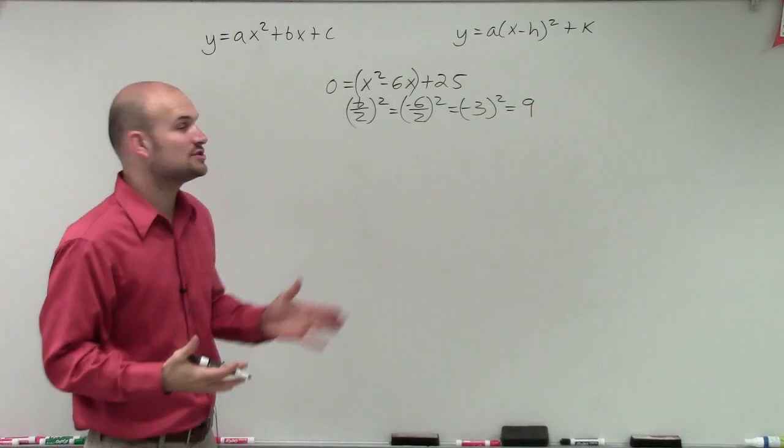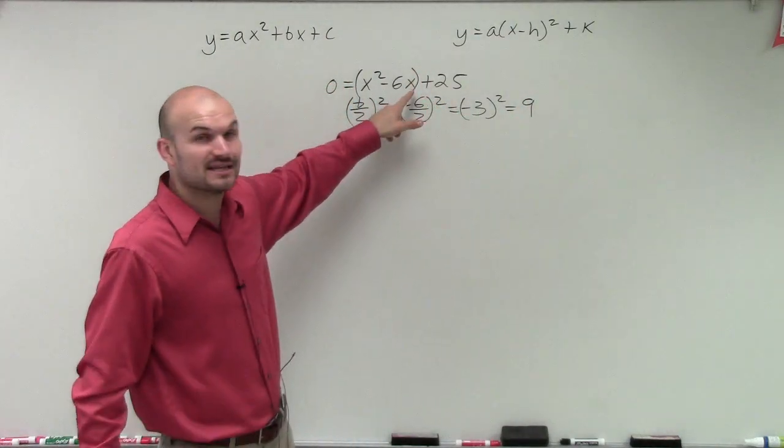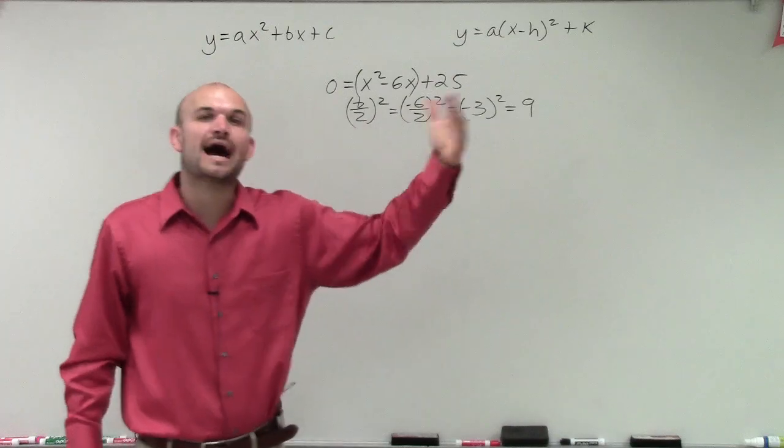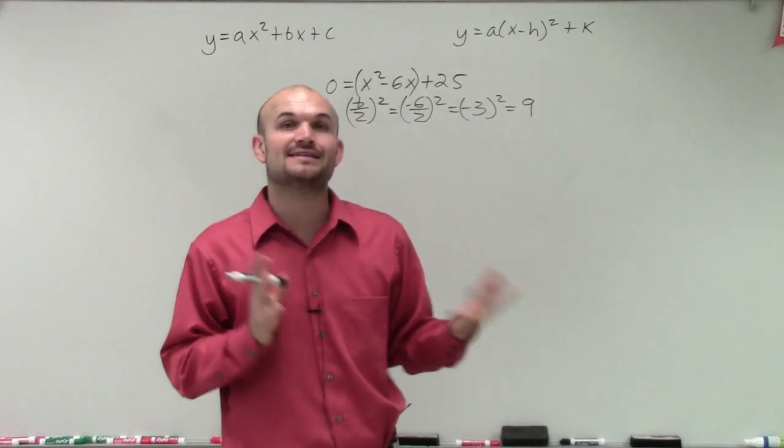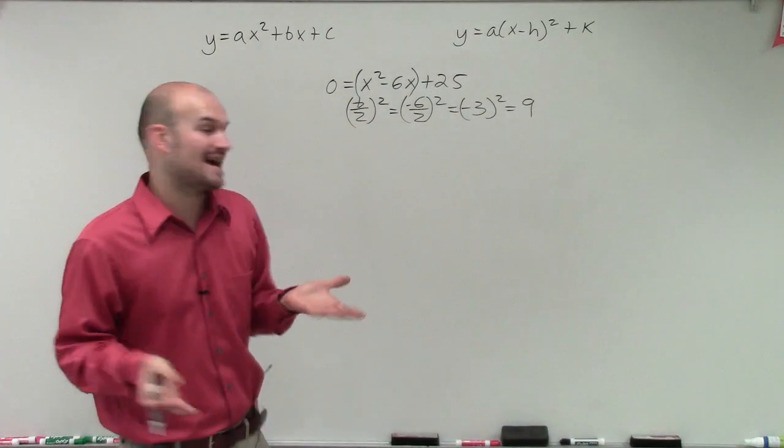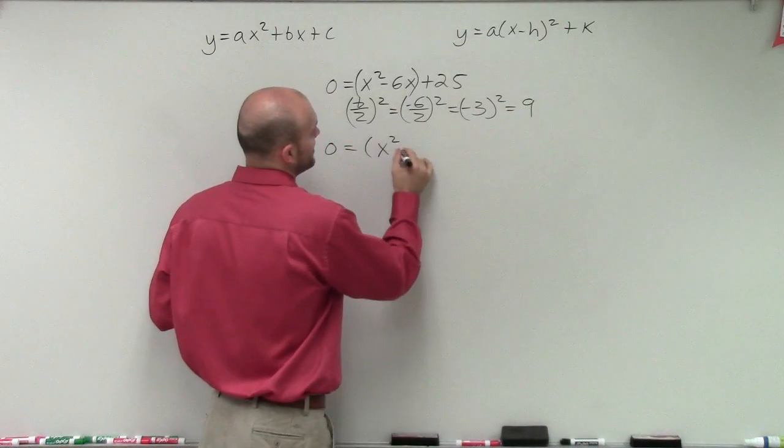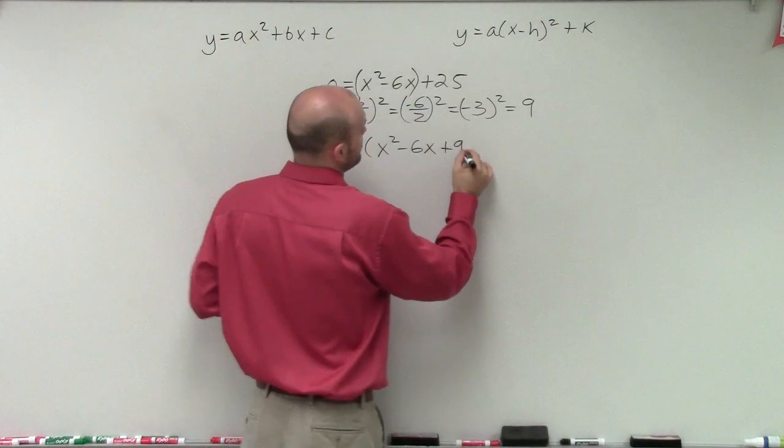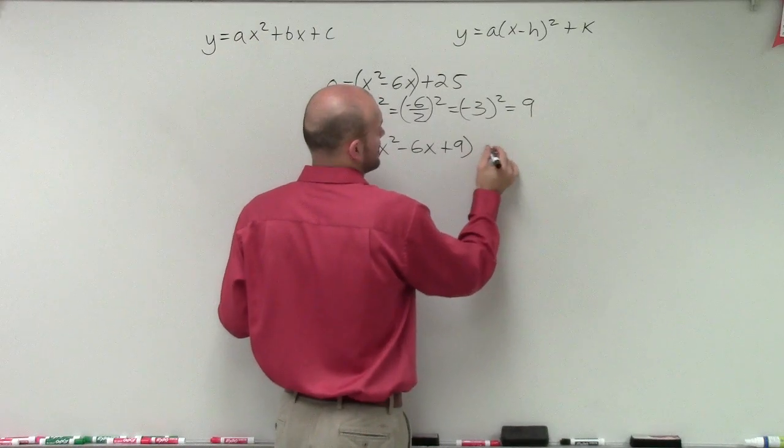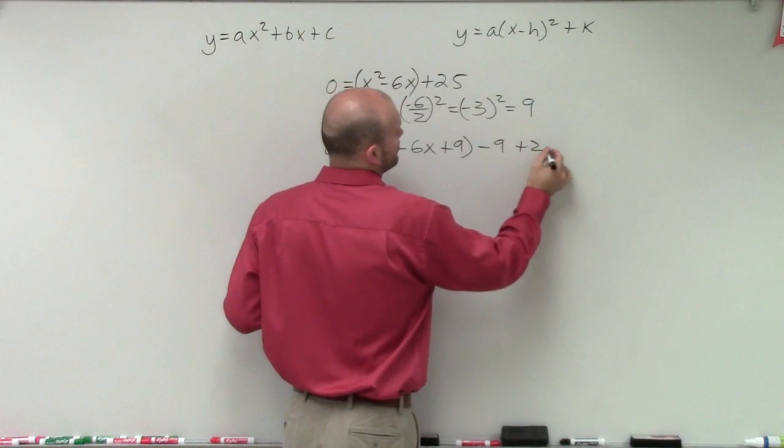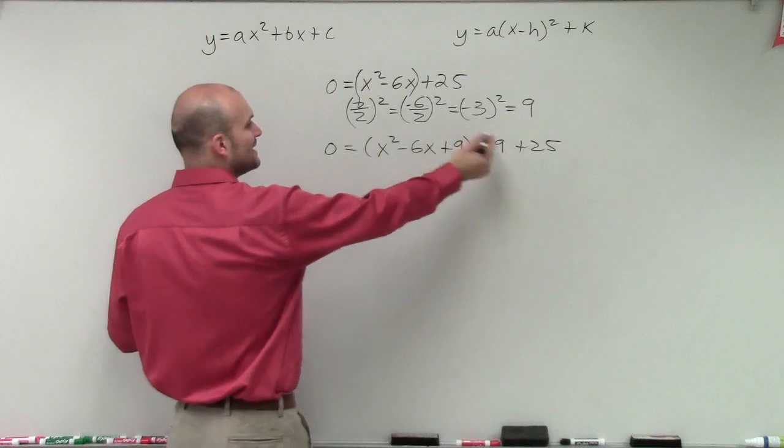Now what I'm going to do is I'm going to add the 9 inside the parentheses. And then I'm going to subtract it outside the parentheses. And you've got to make sure you add and subtract it to keep your equation exactly the same. So therefore, I have 0 equals parentheses x squared minus 6x plus 9 minus 9 plus 25. Notice how I added and subtracted the 9.